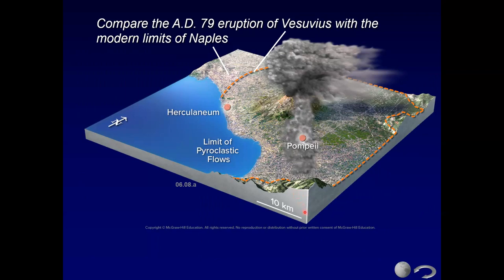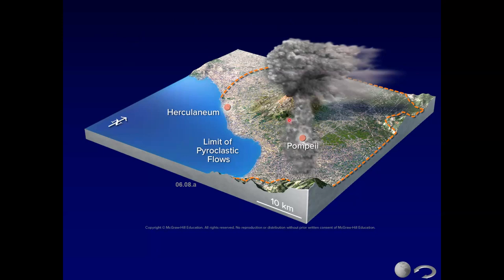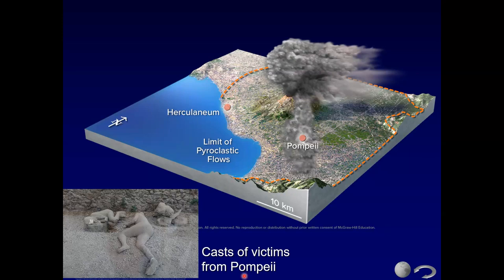One of my favorite volcanoes: Mount Vesuvius. The eruption was in AD 79, and we can look at the modern limits of Naples. If Vesuvius were to erupt again, much of Naples would be affected and in danger, because material was deposited all around this area. You may have seen casts of people who fell victim to this eruption — plaster was poured into the open spaces where people were rapidly buried.